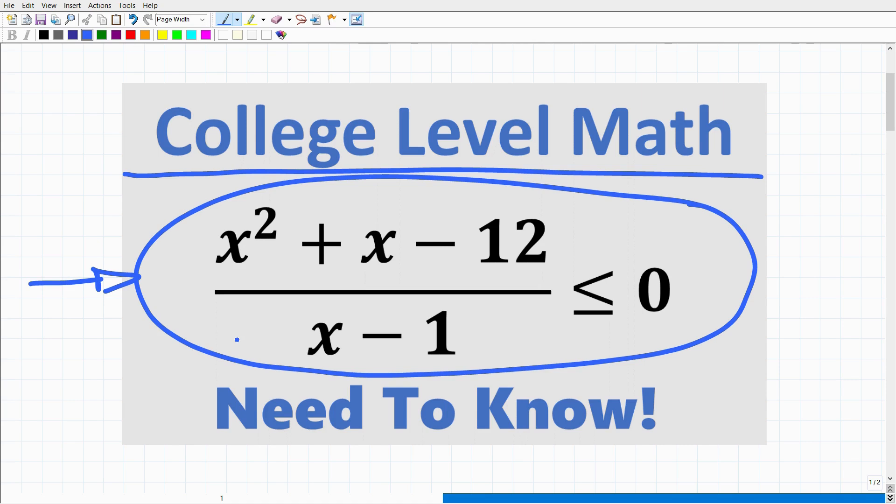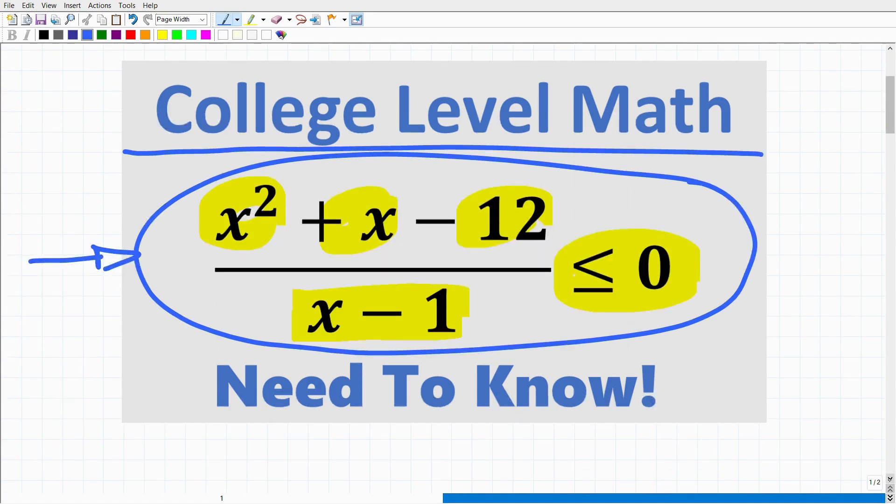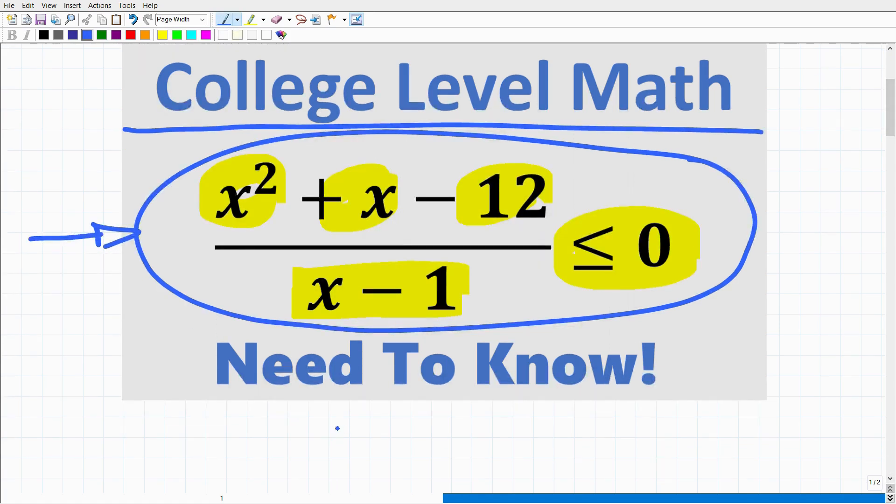Okay, so what we're looking at here is something called a rational inequality. So the problem is x squared plus x minus 12 over x minus 1 is less than or equal to 0. Now, to solve this problem, it's much more involved than a simple linear inequality, like maybe something like 2x plus 1 is less than 0.